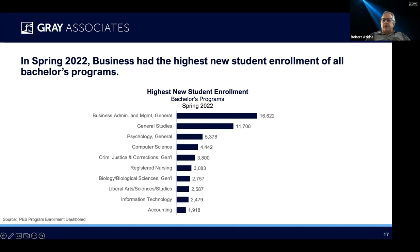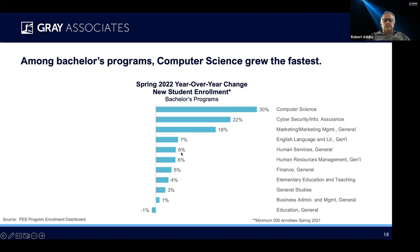As we look at spring 2022, business had the highest new student enrollment of all bachelor's programs, followed by general studies, psychology, computer science, criminal justice. There's nursing, fairly far down the list, which is unusual. And finally, at the tail end, accounting. What grew in terms of bachelor's degree level? Computer science. And here's cybersecurity again, up 22%. That's the last we see of that sort of cluster of computer science and cybersecurity. Then we see marketing. English is up — don't see that often. So I think that's interesting. There may be some kind of a bounce back in English, and maybe I can even hope for the liberal arts in general. But here we see human services, finance, elementary education, general studies, business administration management general, and finally education general.